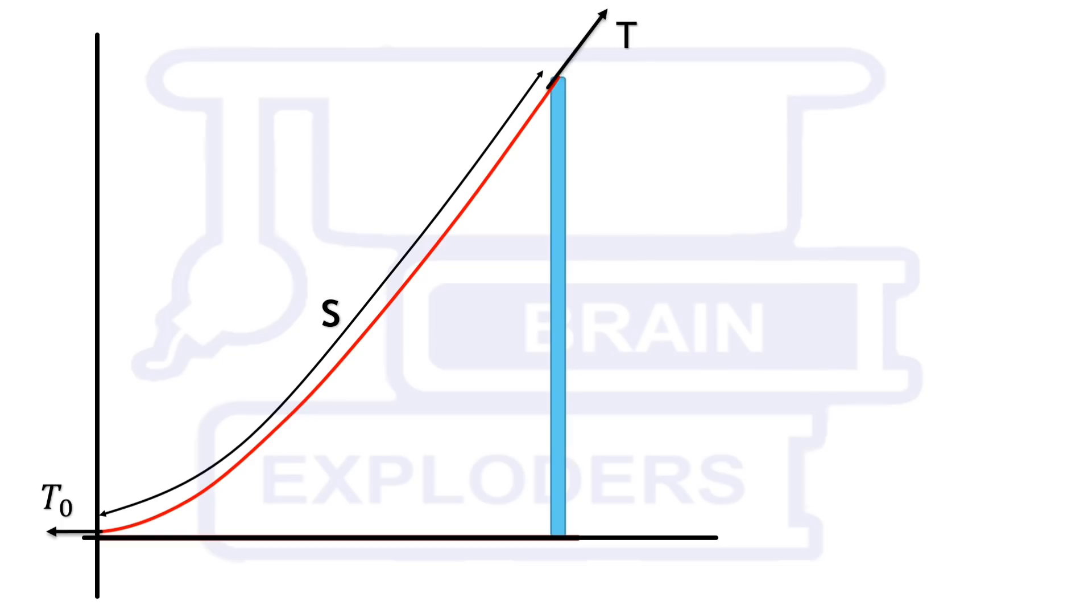Similarly, assume that force at the top is T. Resolve the horizontal and vertical components of this force. If the force is making an angle of theta with the horizontal then the horizontal component becomes T cos θ and vertical component becomes T sin θ.